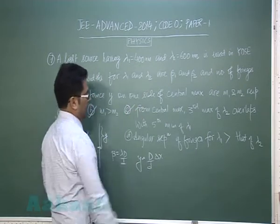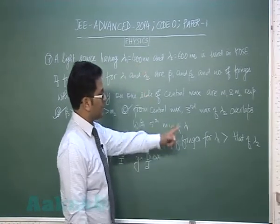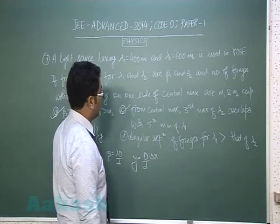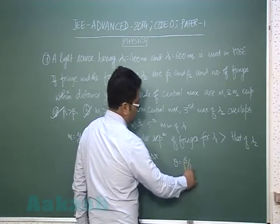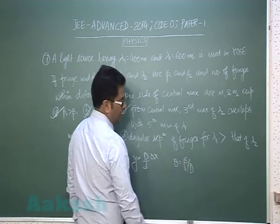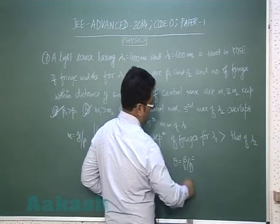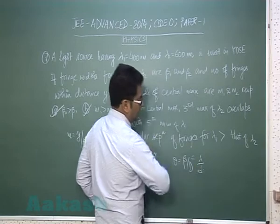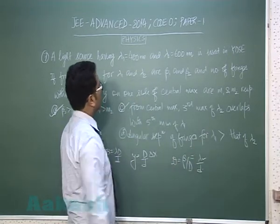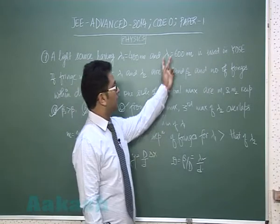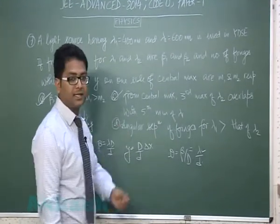The statement that angular separation of fringes for lambda1 is greater than that of lambda2 is incorrect. Angular separation equals fringe width divided by screen-to-source separation, which simplifies to lambda by d. So greater lambda gives greater angular width — meaning angular width of lambda2 must be greater, making this option incorrect.